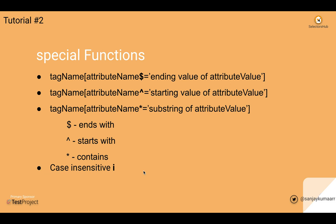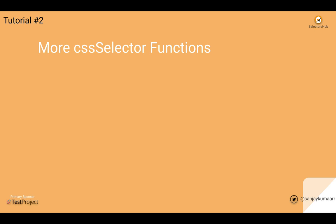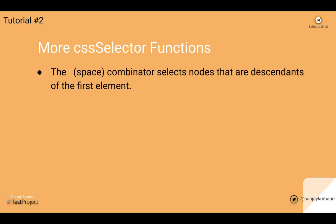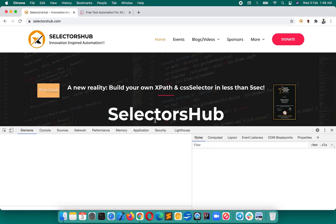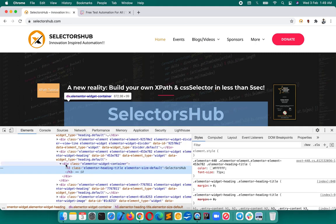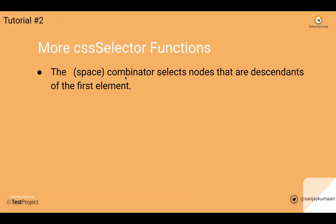I will show you all the use cases — don't worry about that. There are more functions in CSS selectors. For example, a space combinator selects nodes that are descendants of the first element. So if we type 'div' and then space 'h3', it will give me the first descendant of that element.